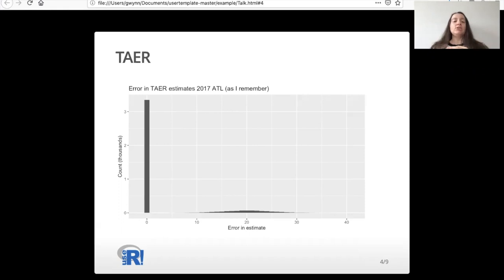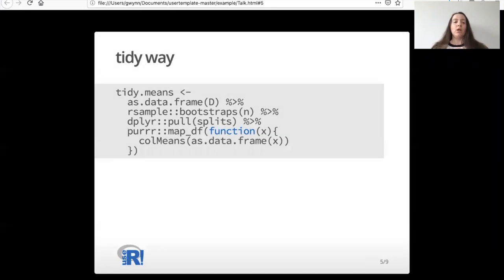Unfortunately, the distribution of the error fails tests of normality, so I had to use a bootstrap. I used the bootstrap the tidyverse way: I make a data frame, take the bootstraps, pull the splits, and find the column means. Unfortunately, it was running really slowly.